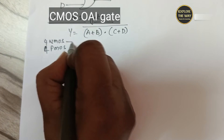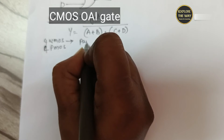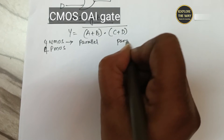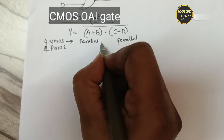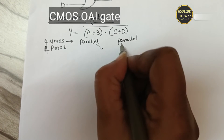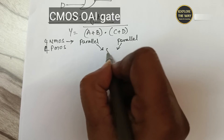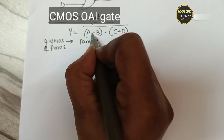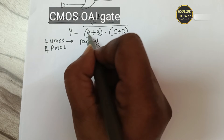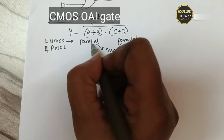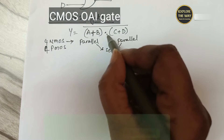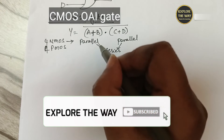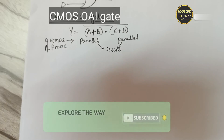Of the 4 NMOS transistors, A and B must be connected in parallel, and C and D also connected in parallel. These 2 parallel combinations must be connected in series. Between the variables, if there is a plus, those 2 transistors must be connected in parallel; and if there is a dot, the 2 combinations must be connected in series.